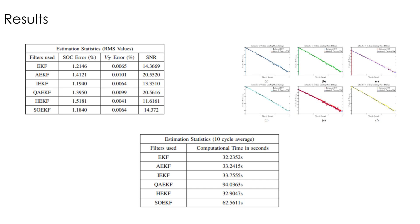Coming to the results, it can be clearly seen that the second order EKF is the best state of charge estimator, with a SOC error of 1.184%. This is mainly because the second order approximation allows for a more accurate linearization of the non-linear system. The hybrid extended Kalman filter was the worst estimator. The Q-adaptive EKF and the adaptive extended Kalman filter showed a very high signal-to-noise ratio, mainly because the Q matrix followed an adaptation in every iteration and hence reduced the noise levels in the estimation process.